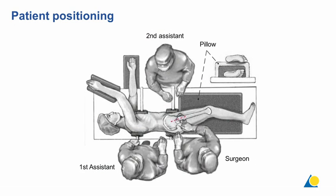Regarding patient positioning — contrary to the classical Kocher-Langenbeck approach — the patient is placed in the lateral decubitus position. A pillow is placed between the two legs so the upper leg is in a stable position. The surgeon stands posteriorly to the patient. We typically have two to three assistants: one on the same side as the surgeon and two on the other side.